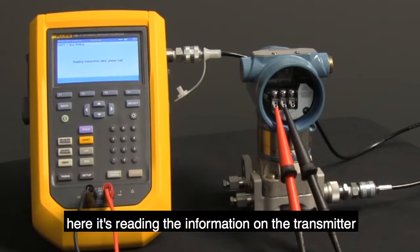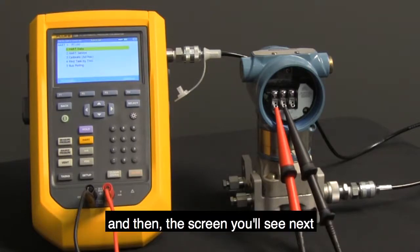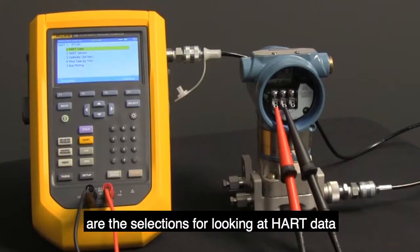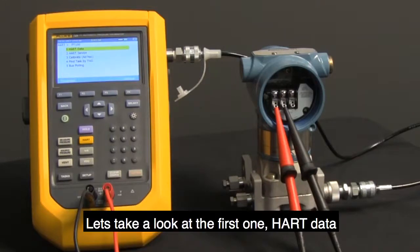Here, it's reading the information on the transmitter, and then the screen you'll see next are the selections for looking at HART data, service, and calibration. Let's take a look at the first one, HART data.